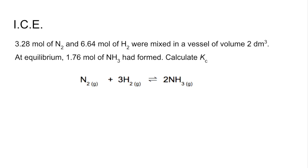So we're told the initial moles of nitrogen and hydrogen, we're told the reaction vessel volume is 2 decimetres cubed, and at equilibrium, we've got 1.76 moles of ammonia being formed. Calculate Kc. So we use the ICE method, and the I stands for initial moles. So the initial moles of nitrogen are 3.28, hydrogen 6.64, and we wouldn't have any ammonia initially.